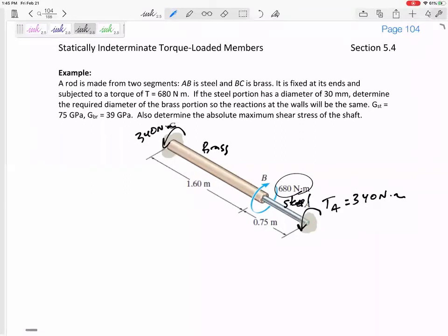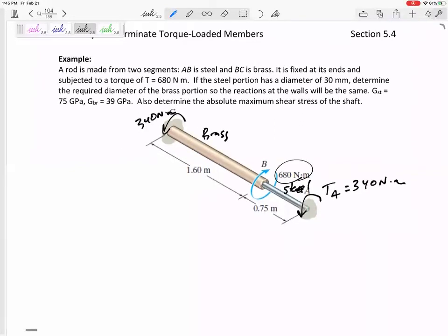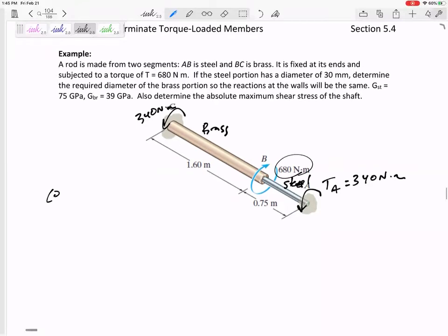So from statics, I got that the torque in A is 340 and the torque at C is 340 because they have to add up to zero with the 680. But in order to find the diameter, let's think about angle of twist. Let's think about our compatibility equation.